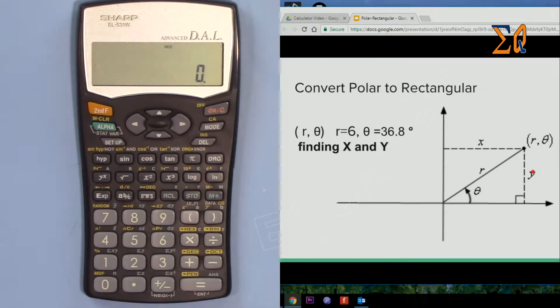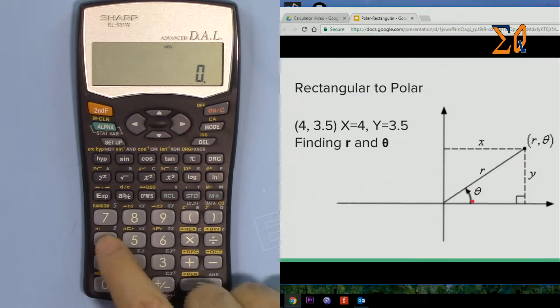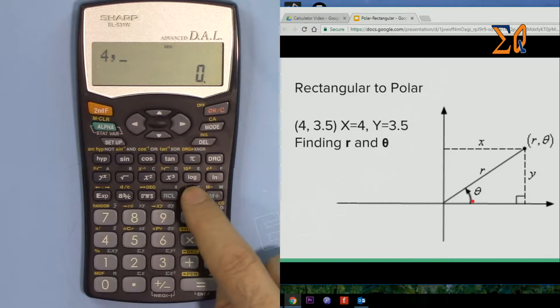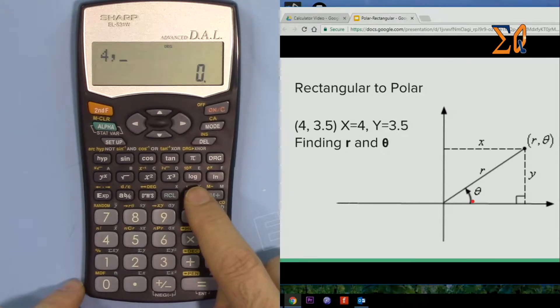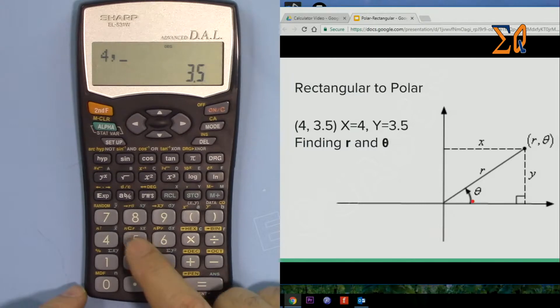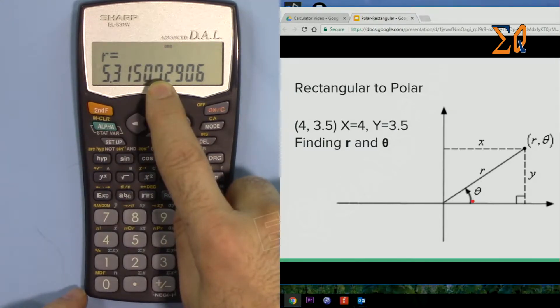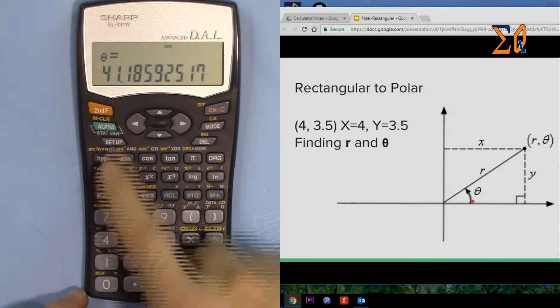Now we have X equals 4, Y equals 3, and you want to find r and theta. So 4, second function, comma, 3.5. And this time, second function theta. Now it gives you r is 5.3, and then second function EXP—theta is 41.18 degrees.